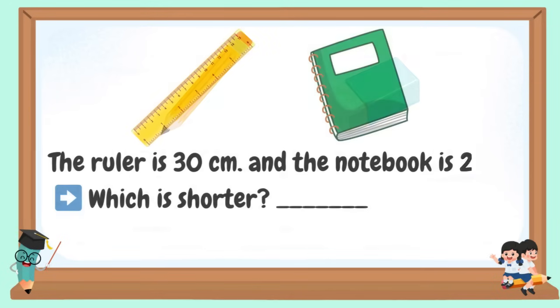The ruler is 30 cm and the notebook is 25 cm. Which is shorter?